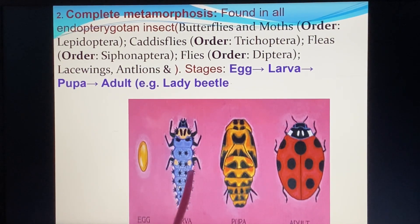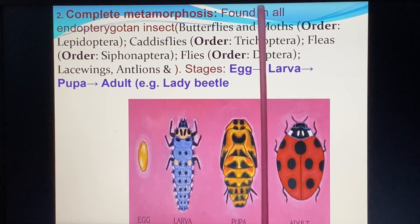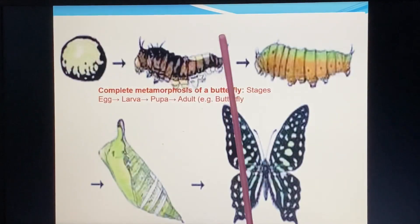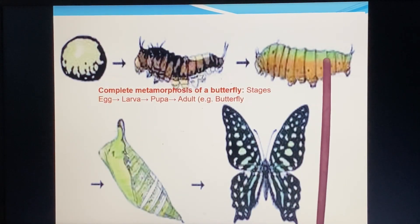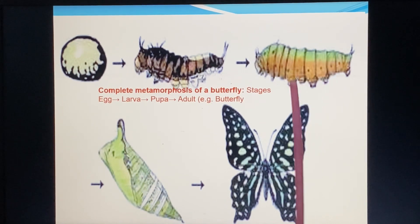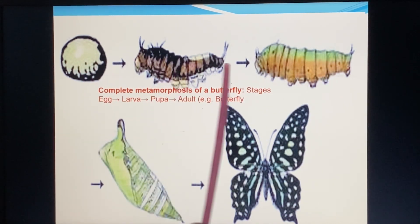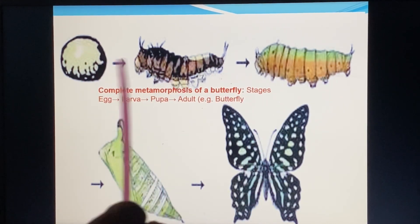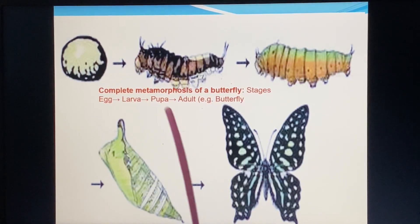Here larva, pupa, and adult — four stages are found. There is complete metamorphosis in butterfly: egg, larva, pupa, and adult — four stages.